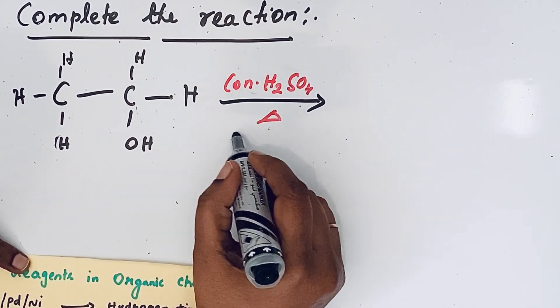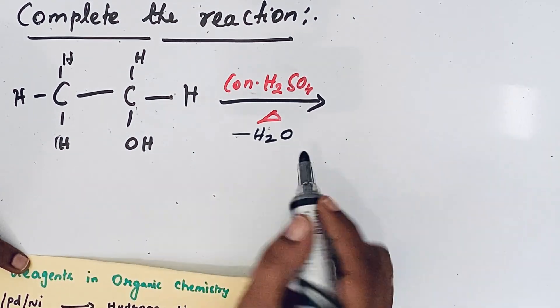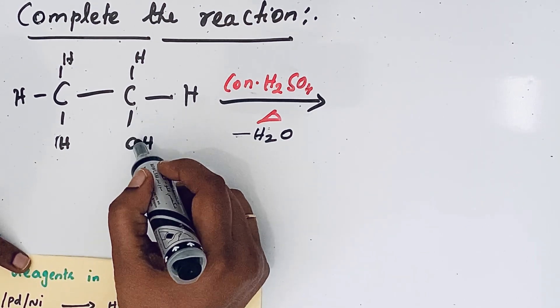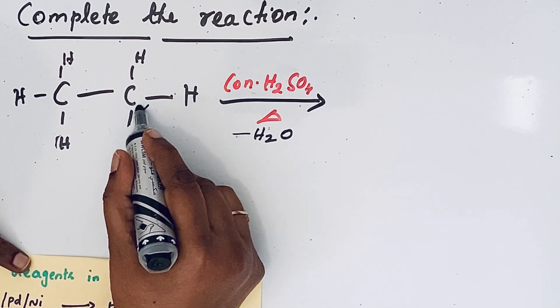So dehydration means minus H2O. OH is the functional group. So the carbon which is attached to the functional group is called the alpha carbon.